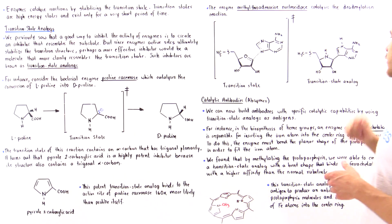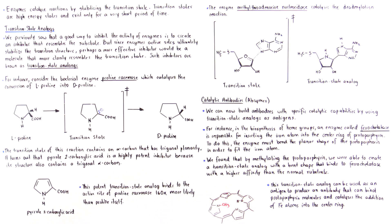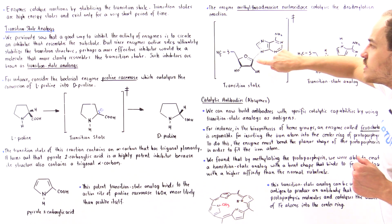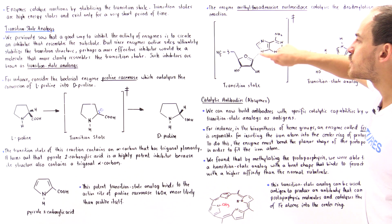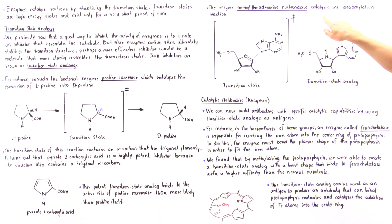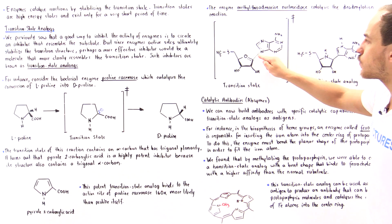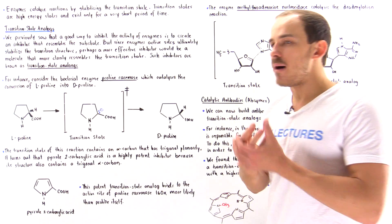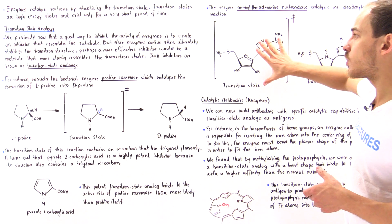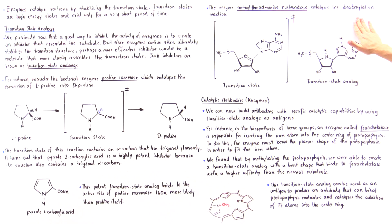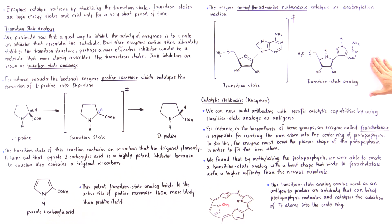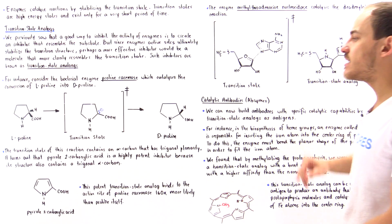Another example is the enzyme methylthioadenosine nucleosidase, which catalyzes the hydrolysis of the bond between the carbon on the sugar molecule and the nitrogen on the base. This reaction is known as deadenylation. By the same argument, if we build a transition state analog that resembles the structure of the transition state in this deadenylation reaction, we can build a very potent inhibitor of this enzyme. We can in fact build a molecule that acts as a transition state analog, and there is a great deal of structural similarity between this molecule and the transition state.